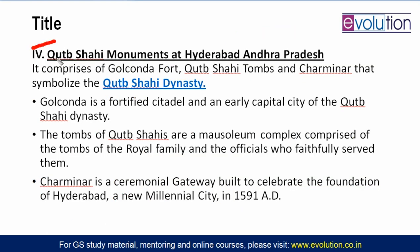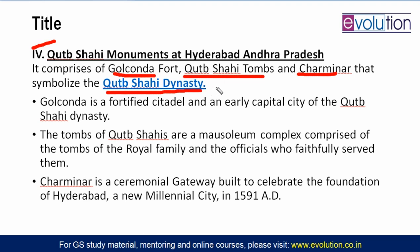The fourth component is Qutub Shahi monuments at Hyderabad, now Telangana — the famous Golconda fort, Qutub Shahi tombs, and Charminar, all symbolizing the Qutub Shahi dynasty. This is the fourth component of India's application to the UNESCO World Heritage Site list. Charminar was created in 1591 AD and is like a ceremonial gateway.